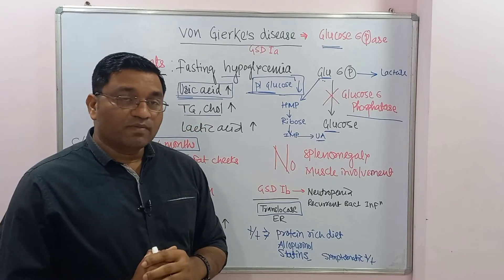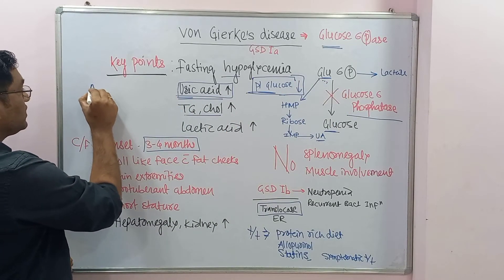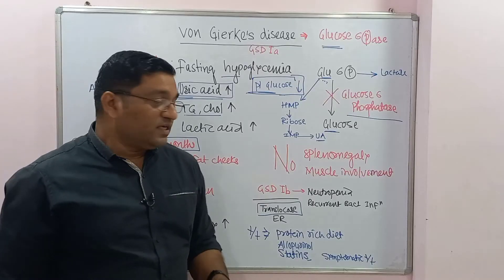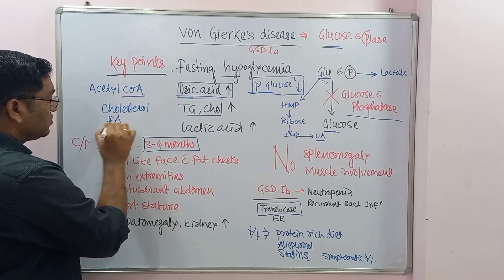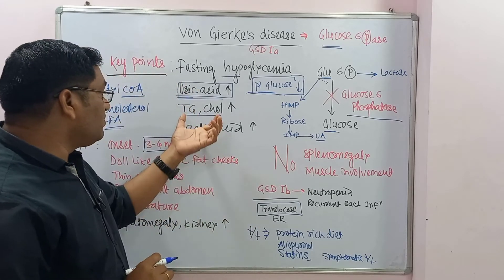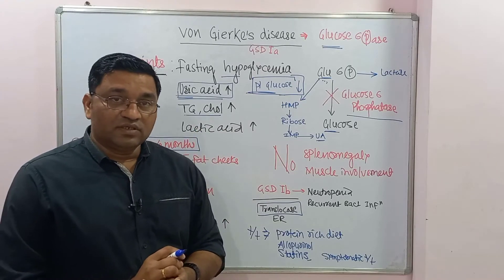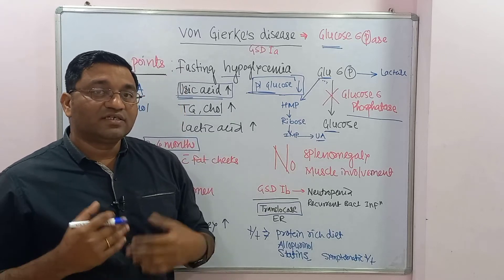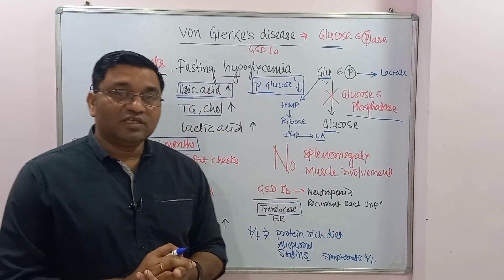Hyperlipidemia occurs because the accumulated glucose-6-phosphate is diverted for the generation of acetyl coenzyme A, which is a precursor molecule for cholesterol and fatty acid synthesis. This increases cholesterol and triacylglycerol levels, causing hyperlipidemia. Lactic acidosis occurs because glucose-6-phosphate via glycolysis leads to the formation of lactic acid, resulting in acidosis.